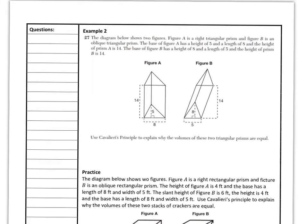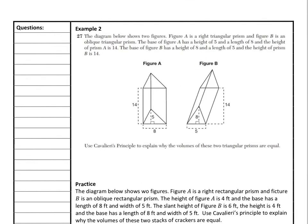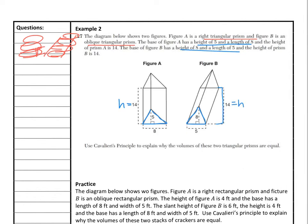Here we have a Regents exam problem — question 27, meaning it's a two-point question. The diagrams show two figures: one is a right triangular prism and the other is an oblique triangular prism, just like with the quarters stacked straight up versus tilted. The base of figure A has a height of five and a length of eight, and the height of prism A is fourteen. The base of figure B has a height of eight and a length of five — just the reversed dimensions — and it also has an overall height of fourteen. Use Cavalieri's Principle to explain why the volumes of these two triangular prisms are equal.